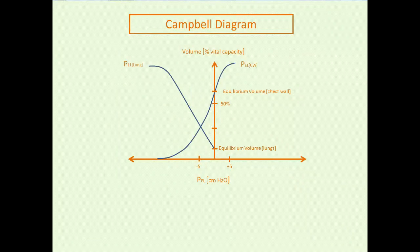I'm going to introduce or reintroduce the Campbell diagram. The Campbell diagram is the superimposition of the elastance or compliance curves. Elastance and compliance are inverse of each other, so physiologists tend to use them interchangeably. This is the elastance curve for the lungs. This is the elastance curve for the passive chest wall — that is the chest wall without any activation of the muscles of inspiration or expiration. It's like chest wall diastole. And the intersection of the two is functional residual capacity.